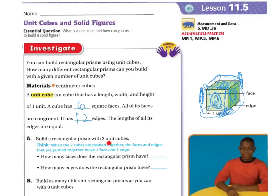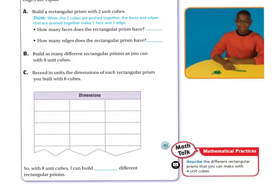Build a rectangular prism with two unit cubes. When two unit cubes are pushed together, the faces and edges are pushed together to make one face and one edge, because you're going to cover one of those up. So how many faces does a rectangular prism have? Six. How many edges does a rectangular prism have? Twelve, just like we saw above.